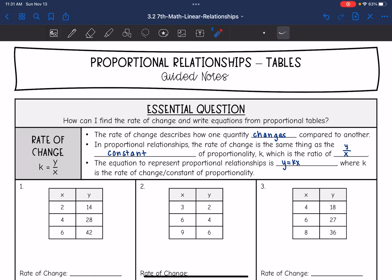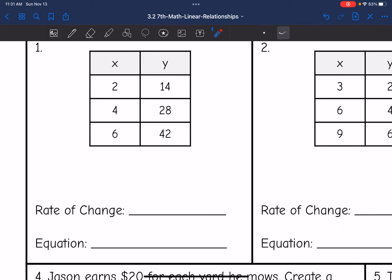All of the tables on this page are proportional, and to find the rate of change, I'm going to do y divided by x with some ordered pair in the table. And then after I have k, I can write the equation in the form y equals kx.